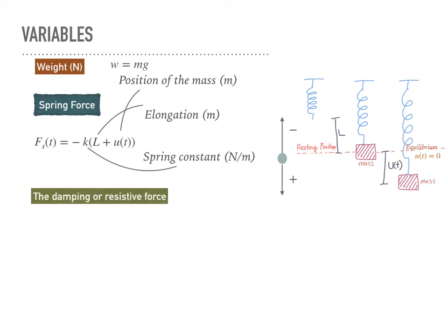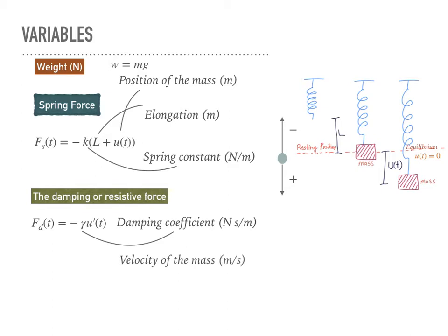Then we have damping or resistive force, which always acts opposite to the direction of motion of the mass. If the mass is moving downward, this force pushes upward, and vice versa — that's why it has a negative sign. This damping force equals the damping coefficient gamma multiplied by the velocity of the mass, u′(t). The spring force relates to position u(t), and the damping force relates to velocity u′(t).